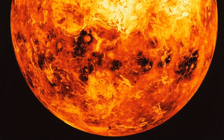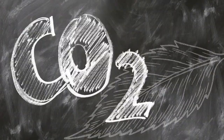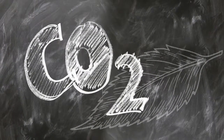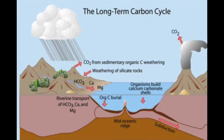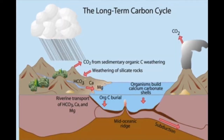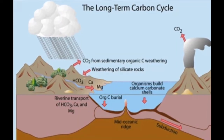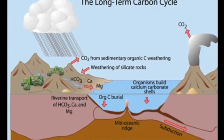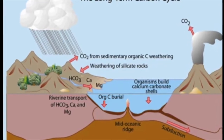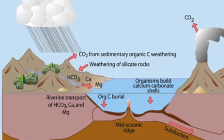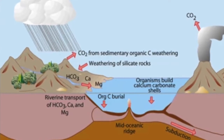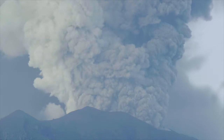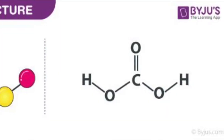Let's break down the carbon cycle into two timelines: the geological cycle and the biological cycle. The geological cycle is a slow process happening over millions of years, as carbon moves from rocks and soil into the ocean and then the atmosphere. This happens through a series of chemical reactions and tectonic activity — that is, volcanic eruptions.